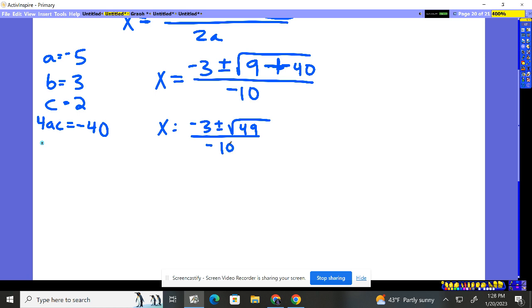All right. So what is the square root of 49? 7. So this is really negative 3 plus or minus 7 over negative 10.